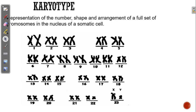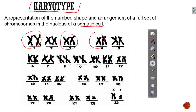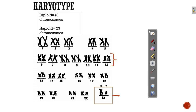One important term you must learn is karyotype. A karyotype is the number, shape, and arrangement of the whole set of chromosomes in your somatic cell. A typical person's somatic cell has 46 chromosomes. Those 46 chromosomes exist in pairs, and we arrange them according to shape, then number. That is what you call a karyotype.